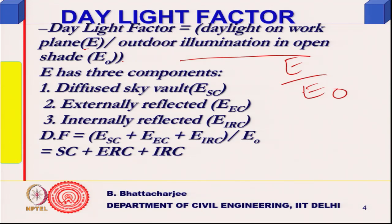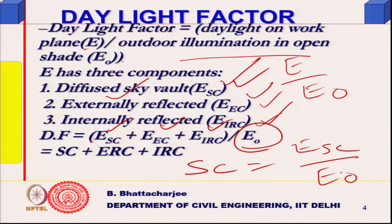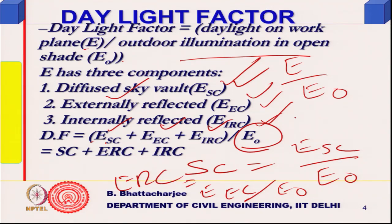Daylight factor has three components because E had three components: one due to diffuse sky — the sky component (SC), one due to externally reflected light — the externally reflected component (ERC), and one due to internally reflected light — the internally reflected component (IRC). The direct component D is excluded.